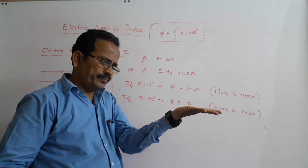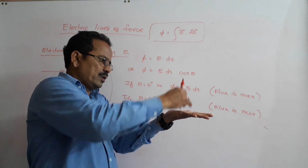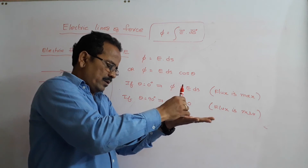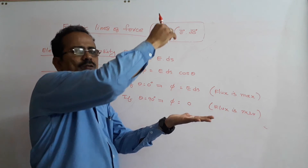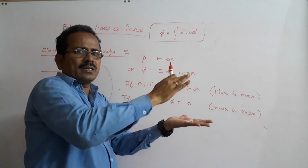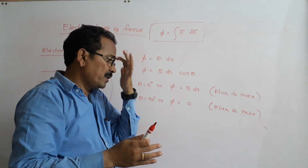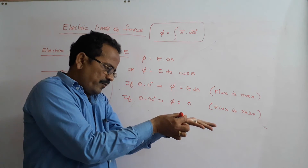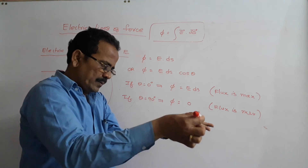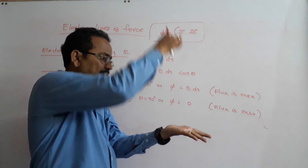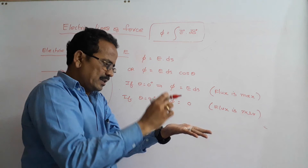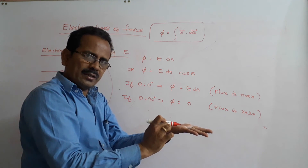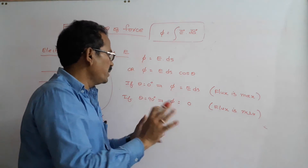Consider this area with E in the same direction as the area normal — in such a case, flux is maximum. Now suppose E is directed along the plane of the area; then the area normal is perpendicular to E, the angle between E and the area is 90 degrees, and in such a case flux is minimum.